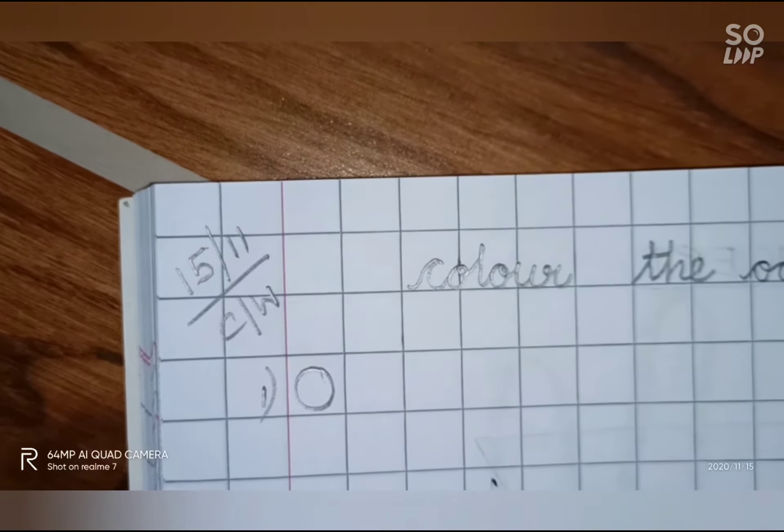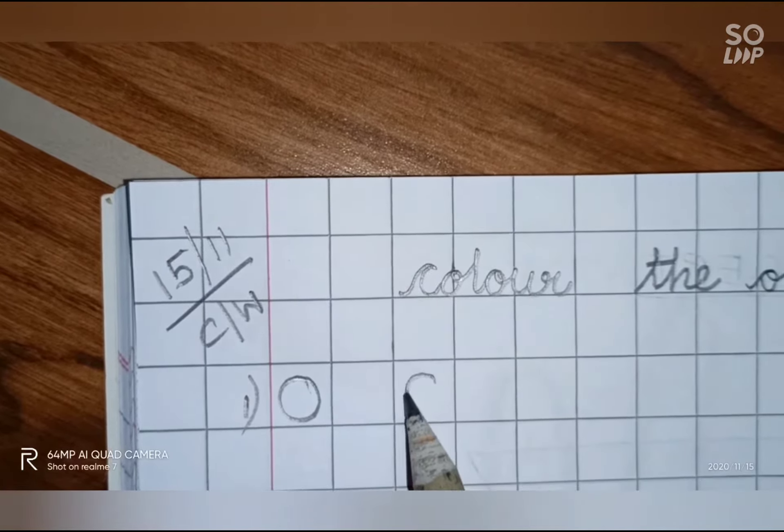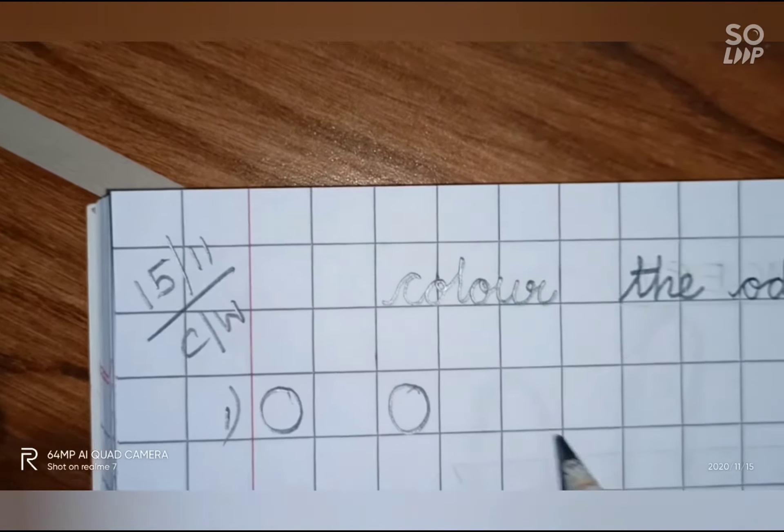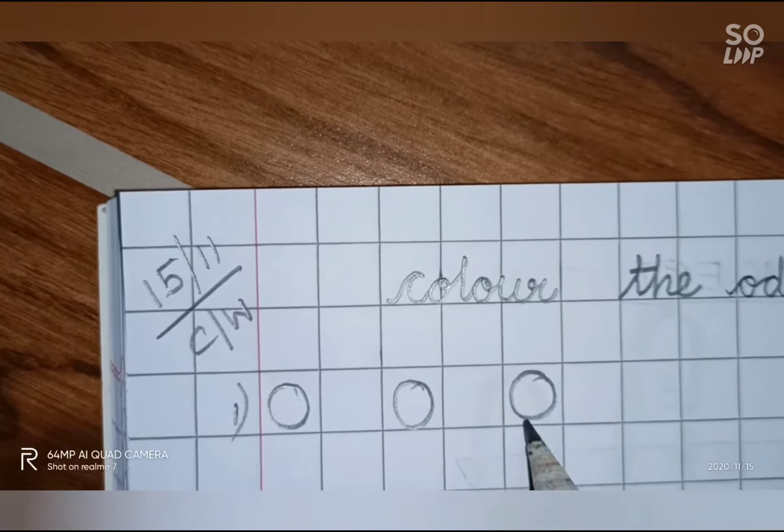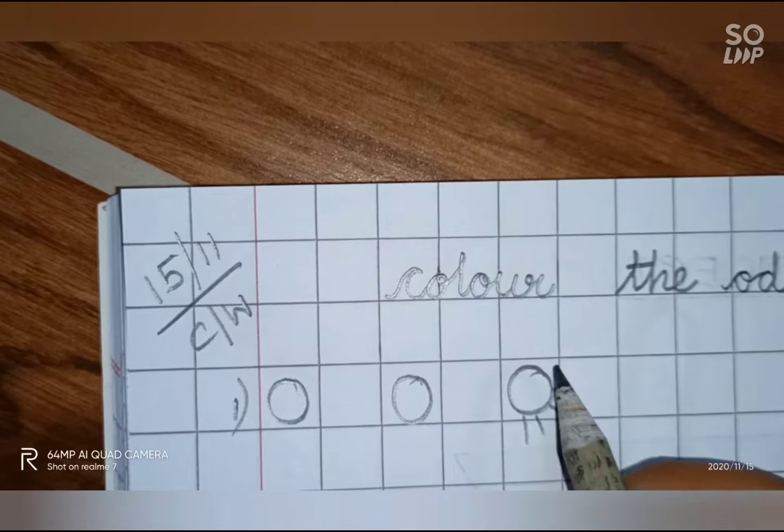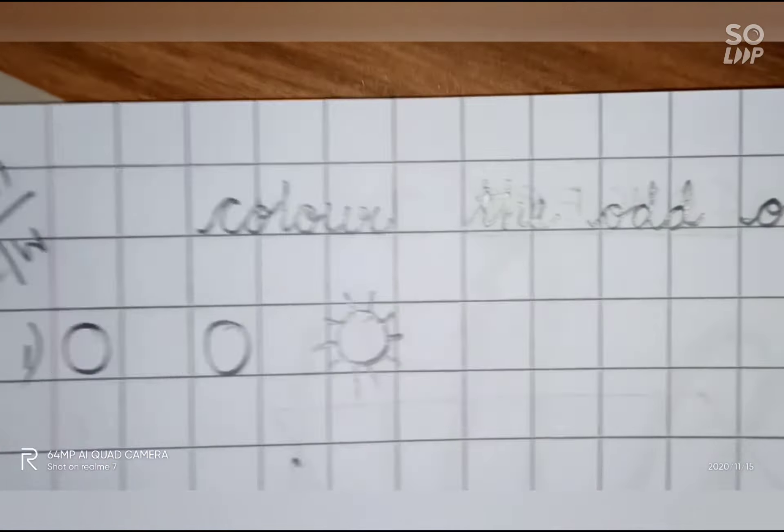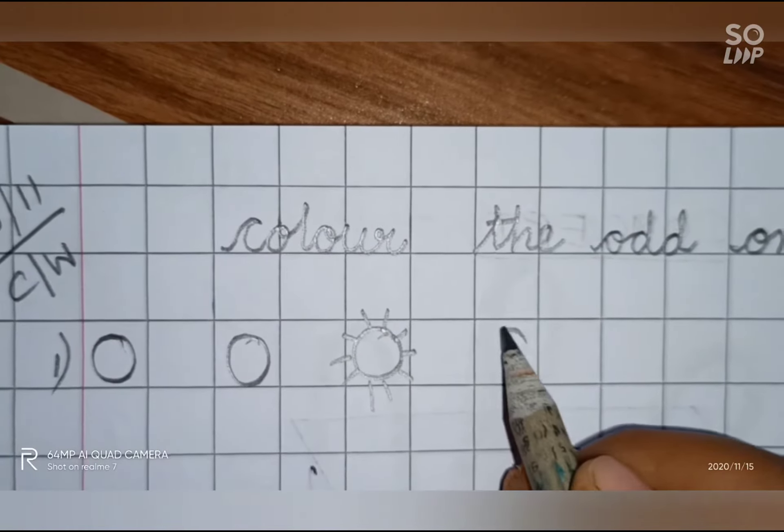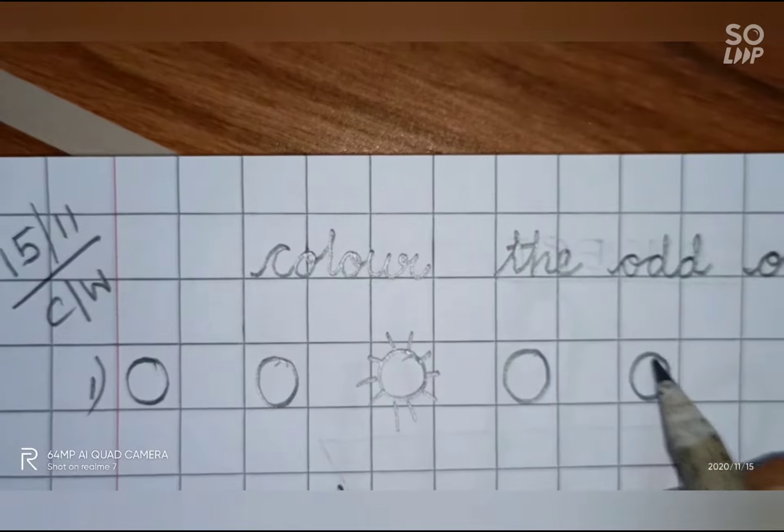So first, we are going to draw a circle. Leave one box. Children, draw another circle like this. Then we will draw a circle but we will give lines and this is sun. Now, we will draw another circle here and repeat the same.